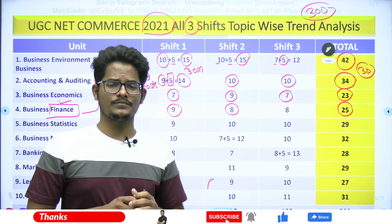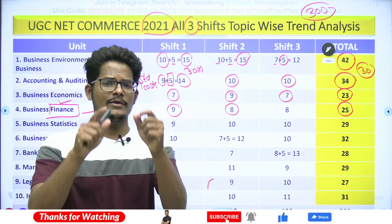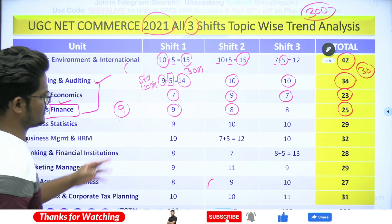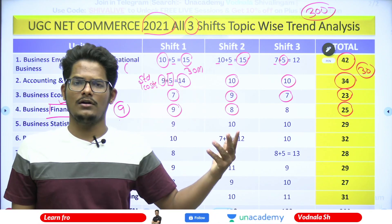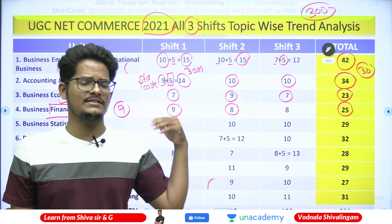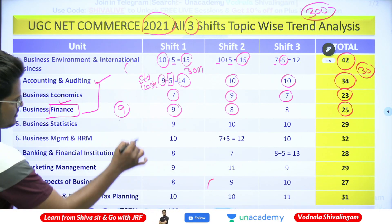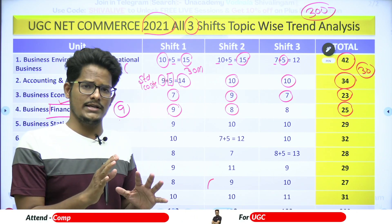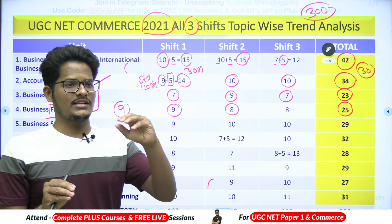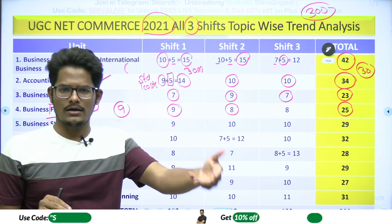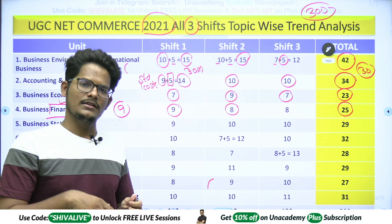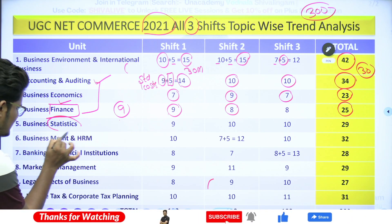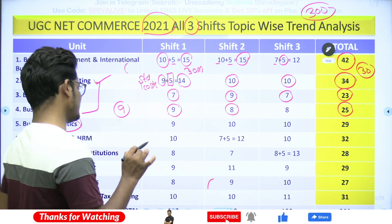Average Rate of Return questions have also been asked. Occasionally surprise questions appear — for example, Arbitrage Pricing Theory was unexpected but appeared this time. If you handle the normal expected questions well, you will be very near the cutoff. Exceptional questions you handle on exam day itself. If you get those too, you enter the JRF zone.